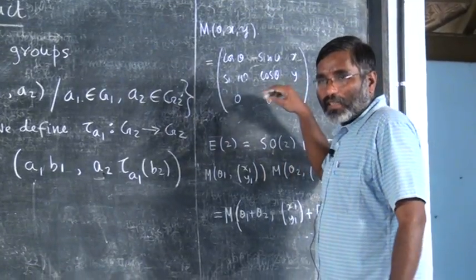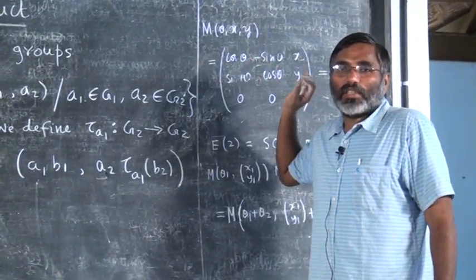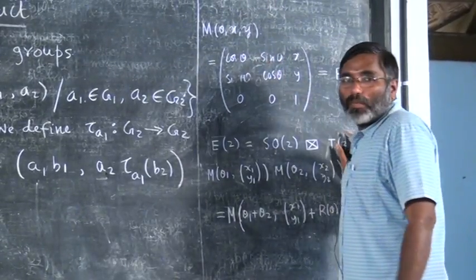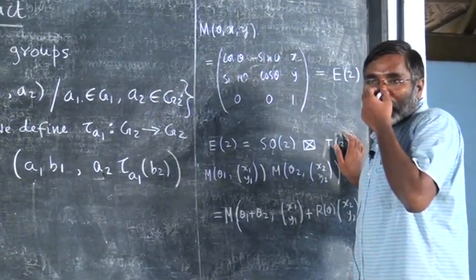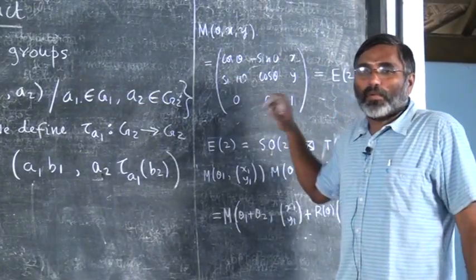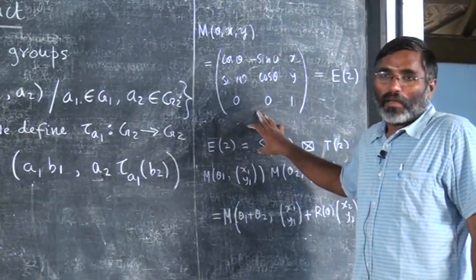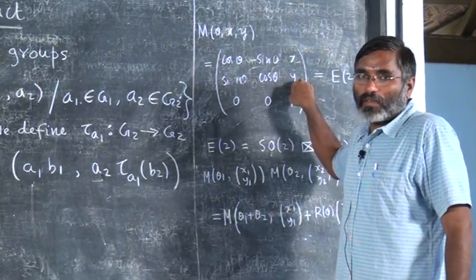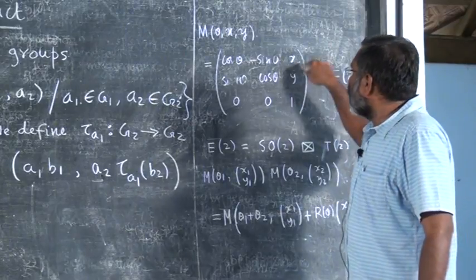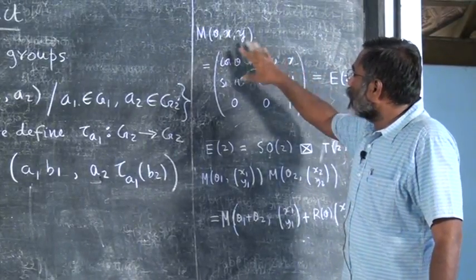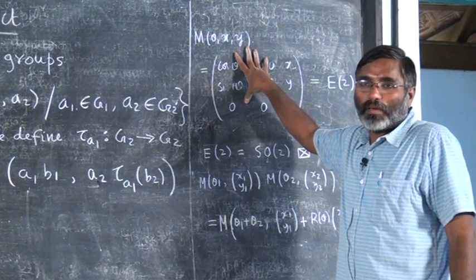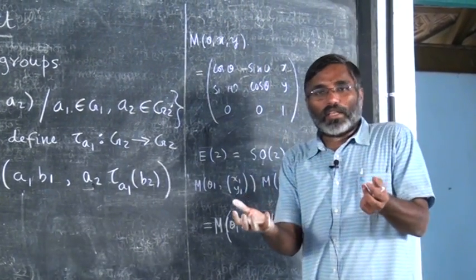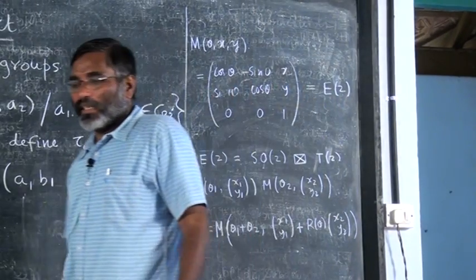This is also part of the problem from yesterday. If you consider θ equal to 0, you will get only the translation group — that becomes a normal subgroup of the Euclidean group. But if you take (x, y) equal to 0, this becomes a rotation group, and that is not a normal subgroup. So both are not equivalent.